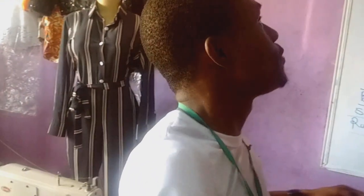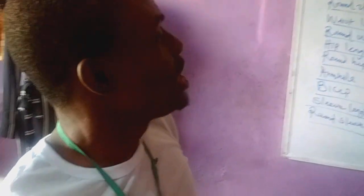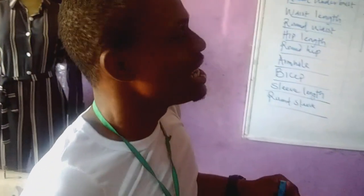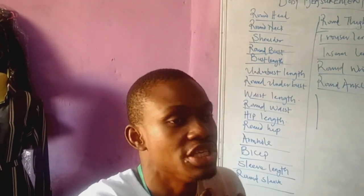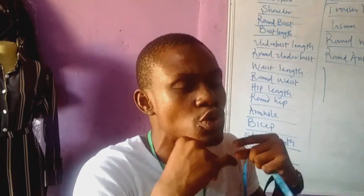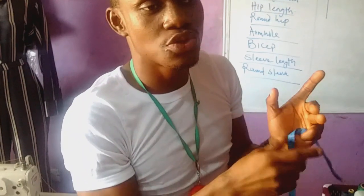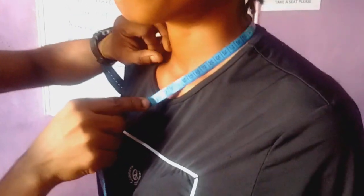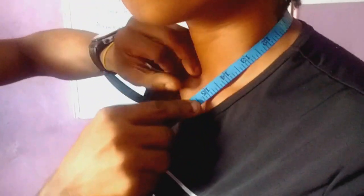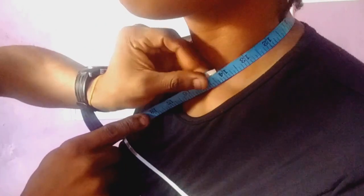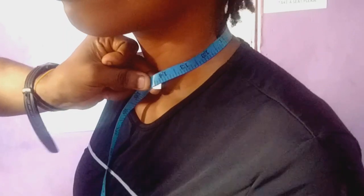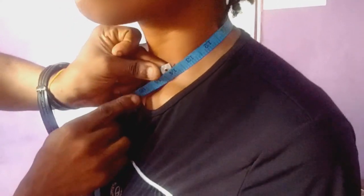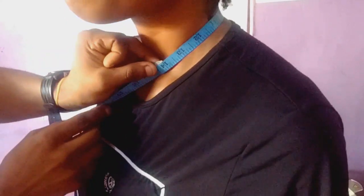Now let's talk about round neck. If you want to make a shirt, you know the collar must not be in excess, so we need a very correct round neck measurement. Just put the tape round the base of the neck. Remember, to give a little allowance, put one or two fingers in between depending on the allowance you want. Her round neck is 14 inches.